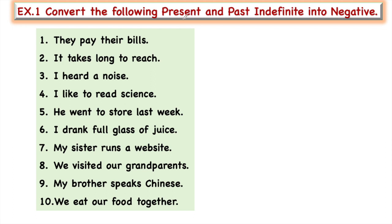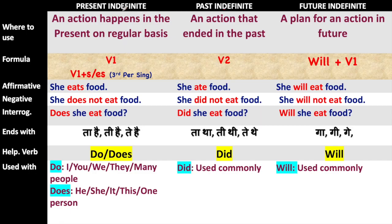Let us see first how to identify present and past indefinite. We use present indefinite tense where the action happens at regular intervals, and we frame the sentence using either the first form of verb or we add S or ES — like 'she eats food.' In past indefinite tense, which is used when the action ended in the past, we use the second form of verb, such as 'ate.'